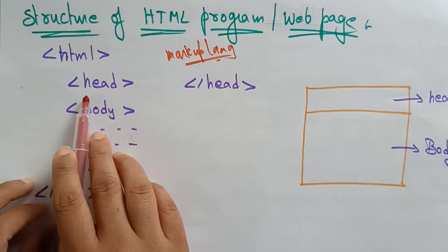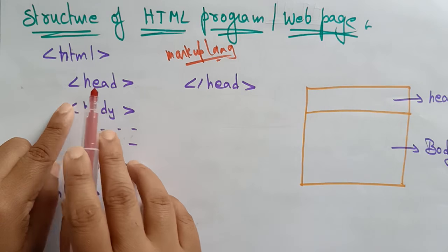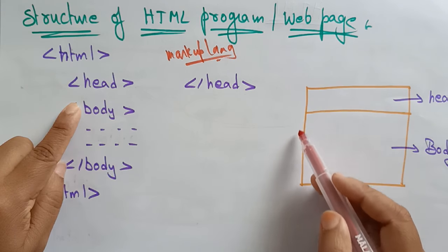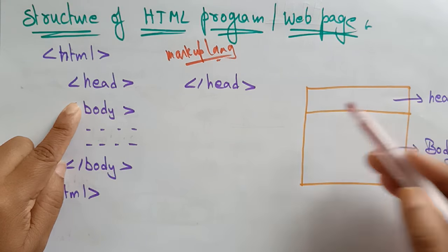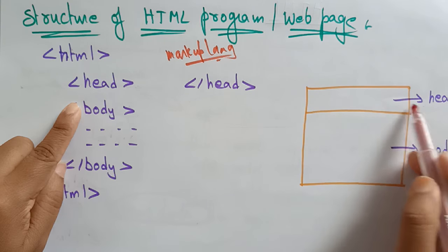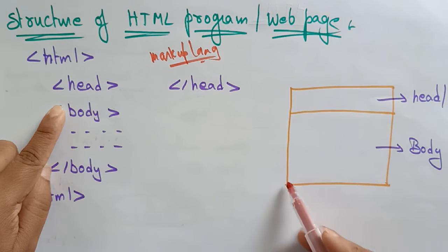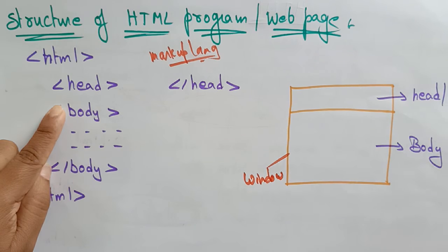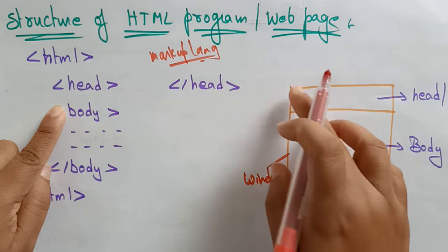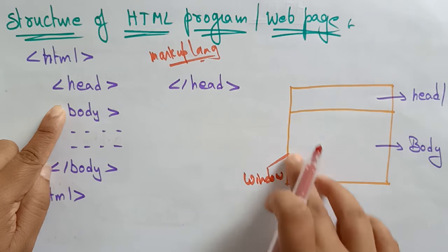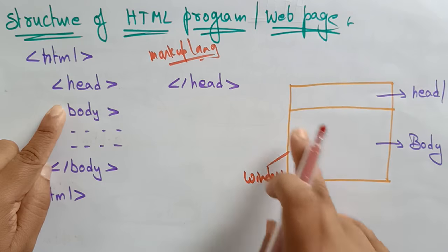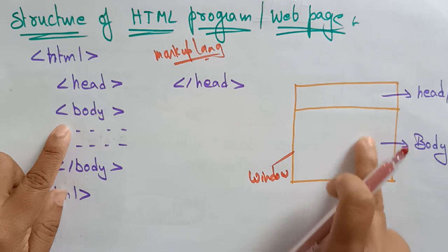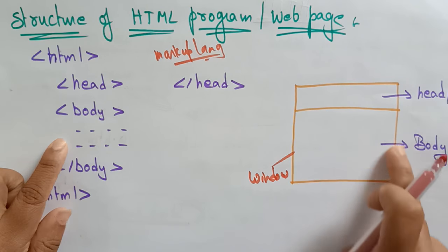Inside HTML, you have the <head> tag as well as the <title> tag. The topmost row of the page — the title — is written in the head section. The complete browser window, whatever you see on your laptop or any gadget, is a web page. That window is divided into two parts: the head section, which holds the title, and the body section.